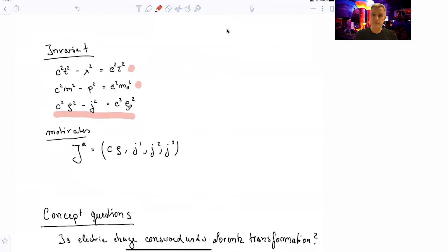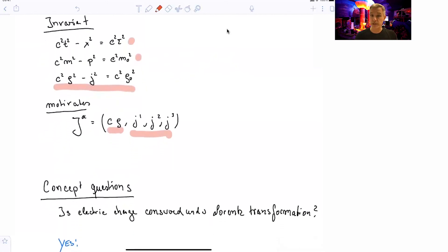OK, so concept questions. Is the electric charge conserved under the Lorentz transformation? But did we actually change the charge? So we have the charge density here and the current here. But did we actually change the charge under the Lorentz transformation? The answer is no, we did not change it. So the charge is conserved, or the charge is invariant under the Lorentz transformation.